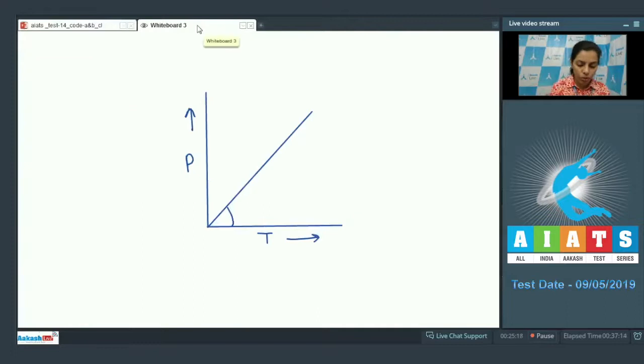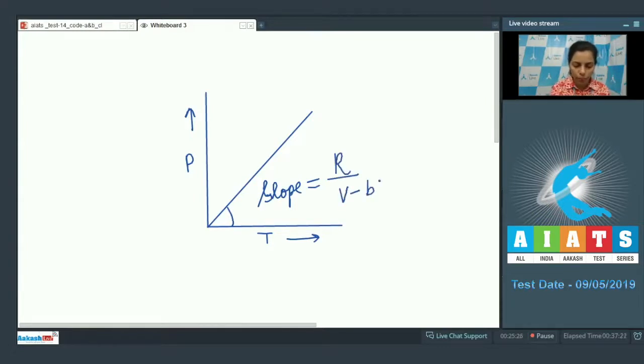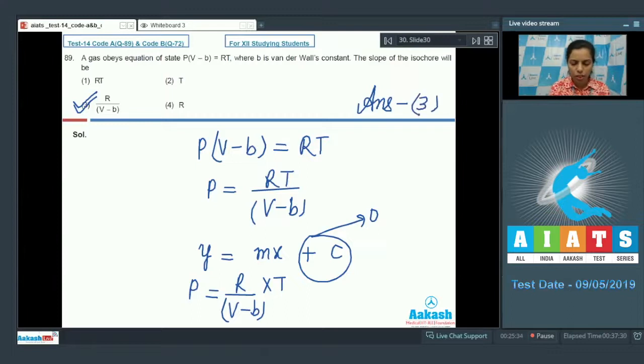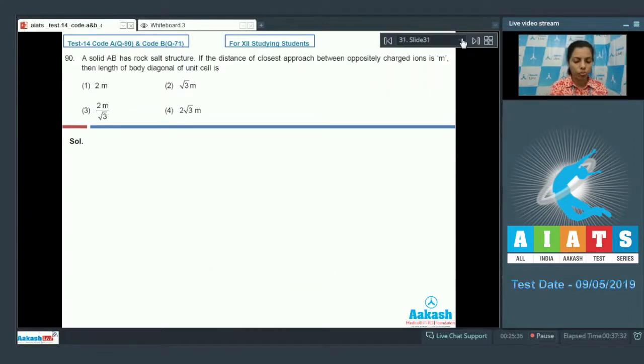So what would be the slope of the graph? That slope of the graph is equal to R upon (V - b), where this is given R upon (V - b). It's given in option 3, so this becomes my correct answer.